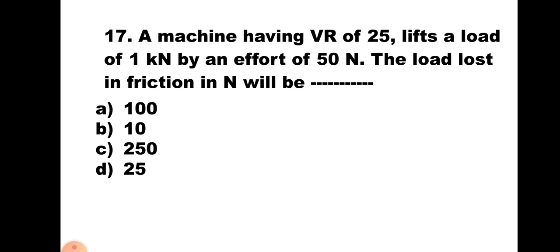Question number 17: A machine having VR of 25 lifts a load of 1 kilo Newton by an effort of 50 Newton. The load lost in friction in Newton will be — A) 100, B) 10, C) 250, D) 25. The formula for load lost in friction is P × VR − W. With P = 50, VR = 25, W = 1000, the answer is 250 Newton. Hence the correct answer is C) 250 Newton.